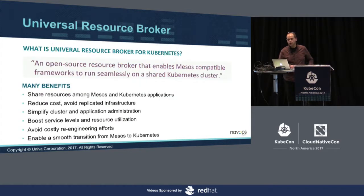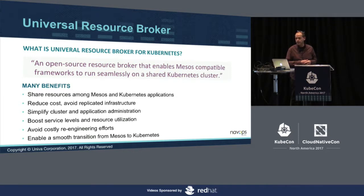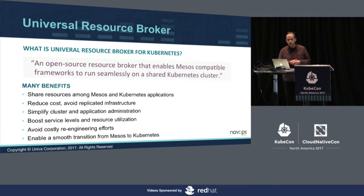Now switching over to the Universal Resource Broker — the real topic of this talk. Universal Resource Broker is first of all open source. It is an implementation of a Mesos-compatible resource broker, and it allows you to run Mesos frameworks seamlessly on a Kubernetes cluster. You can share resources across Mesos frameworks and standard Kubernetes applications, which helps you reduce costs because you do not need to run multiple clusters — say, a Mesos cluster next to a Kubernetes cluster.